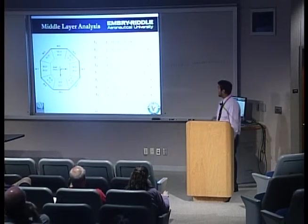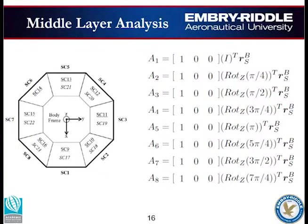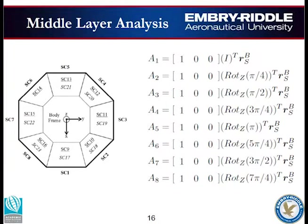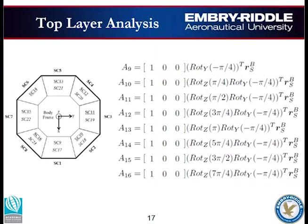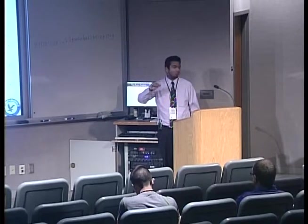For the middle layer, solar panels 1 through 8 go all the way around. Since each surface frame only picks up the x-component of light, these are 1, 0, 0 vectors. For solar panel SC1, the body x-axis aligns with the surface frame x-axis, so we use the identity matrix. For SC2, rotating by pi over 4 about the z-axis brings us to that panel, and each subsequent panel is an increment of pi over 4. For the top and bottom layers, we first rotate about the z-axis, then rotate about the y-axis to bring the frame up or down to those solar cells.